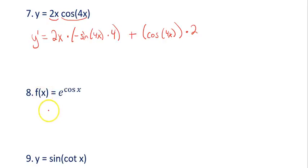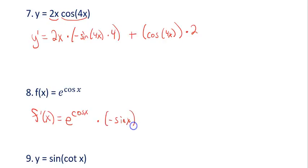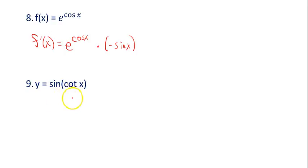Example 8 mixes in the exponential rule because the base is e and the variable is in the exponent, which also includes trig. Overall this is an exponential, so repeat the base e raised to the exponent. Normally you'd multiply by the natural log of the base, but the natural log of e is 1, so those cancel. Then take the derivative of the exponent: the derivative of cosine of x is negative sine of x. Since x is plain, there's nothing else to add.